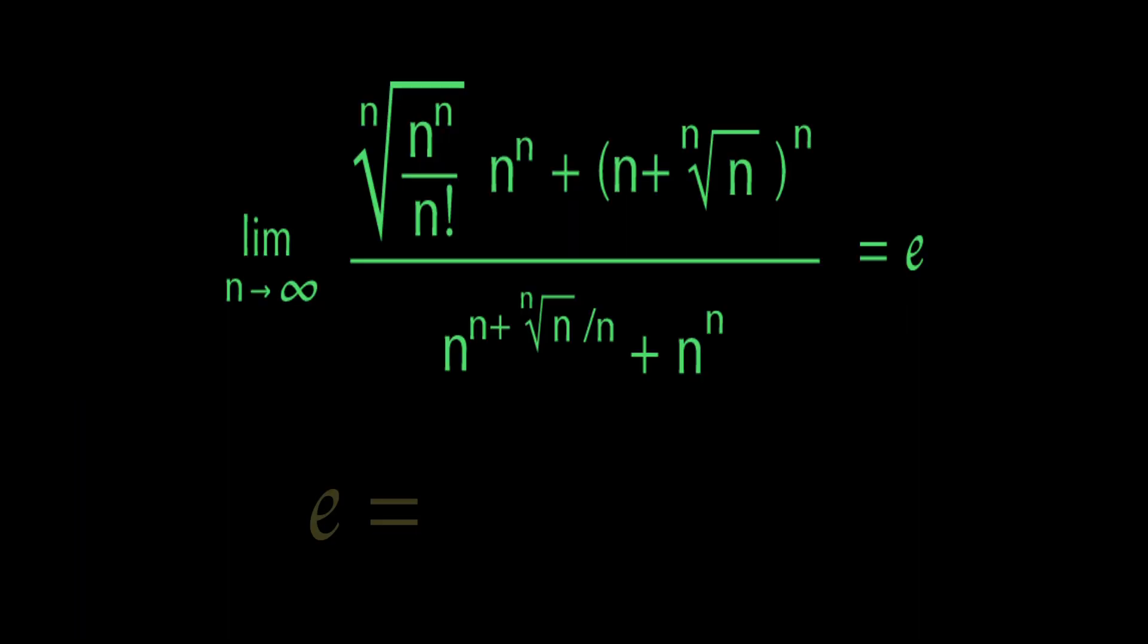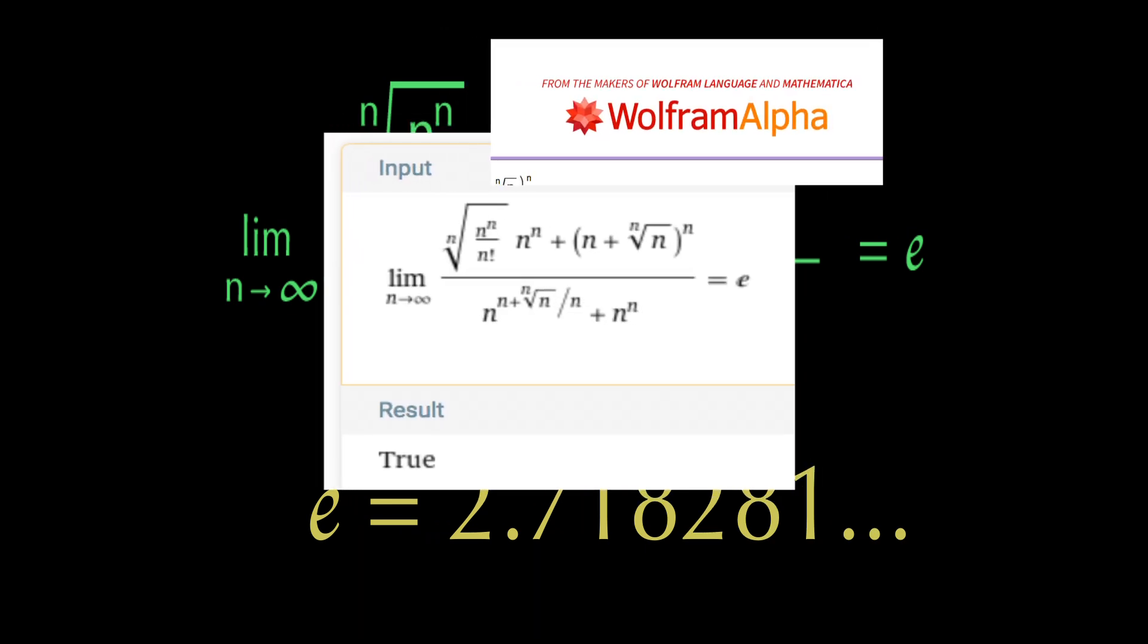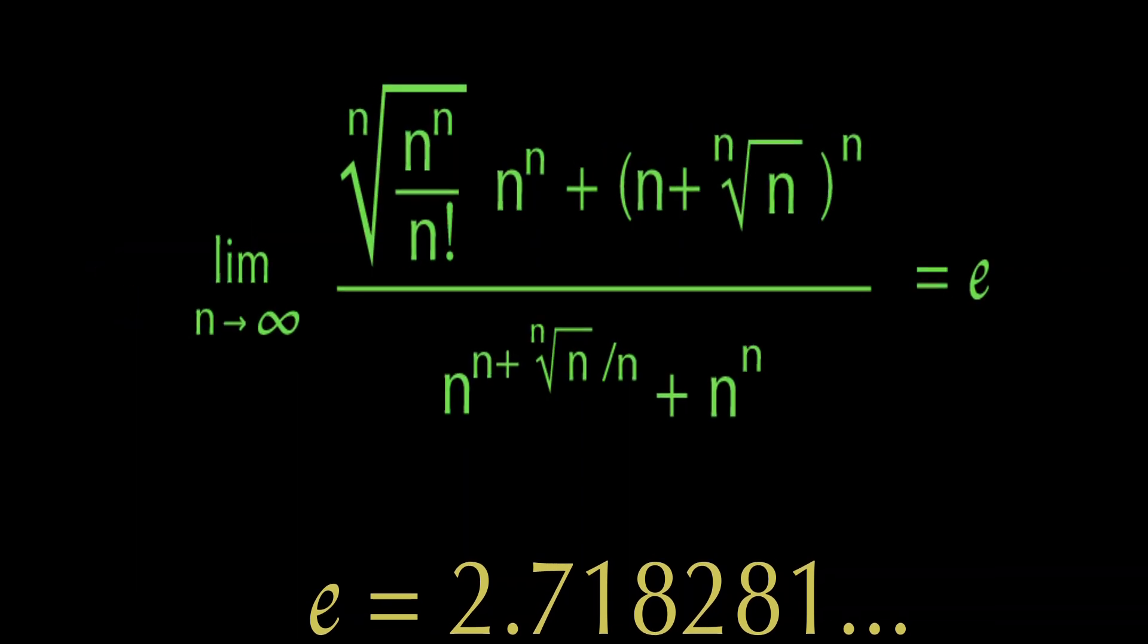Feel free to pause right now. So the solution is E, the famous irrational constant 2.718 and so on. And yes, you can put that into Wolfram Alpha and get that very result. But why E? What is going on?